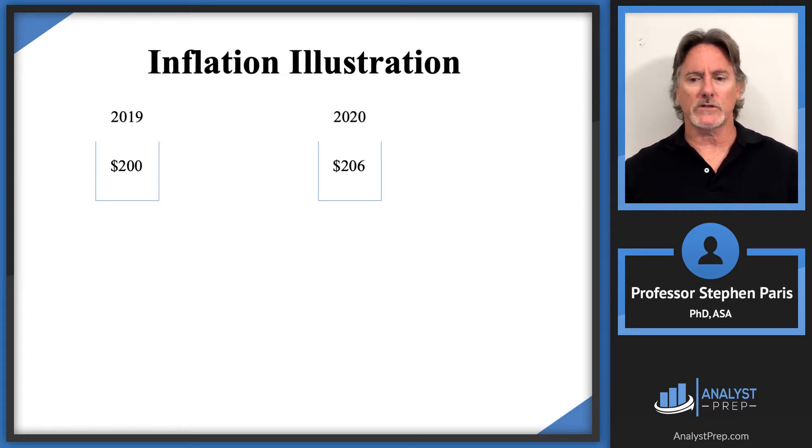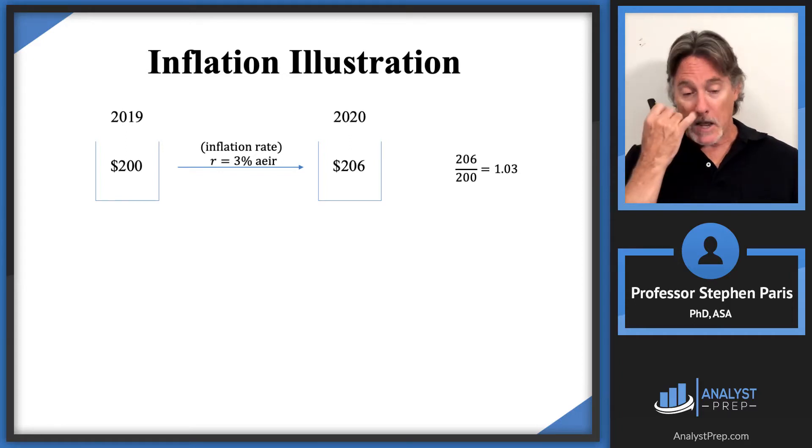Since 206 divided by 200 is 1.03, going from 200 to 206 implies you're using a 3% annual effective interest rate. I'm going to denote that by r and call that the inflation rate.